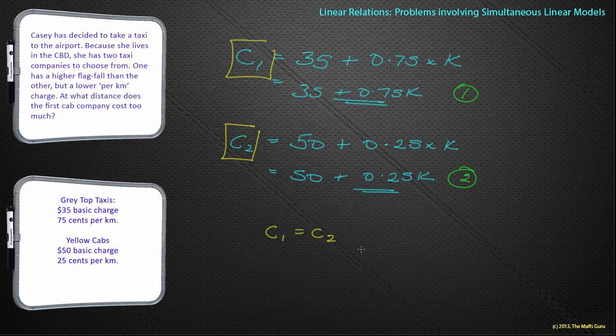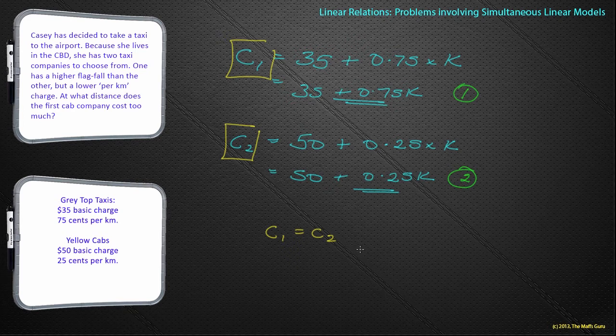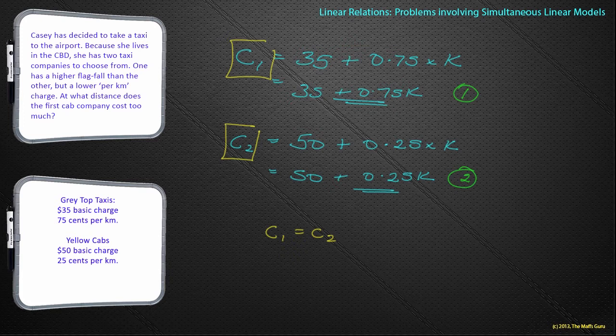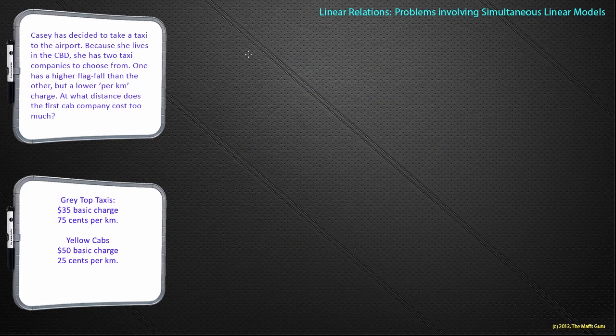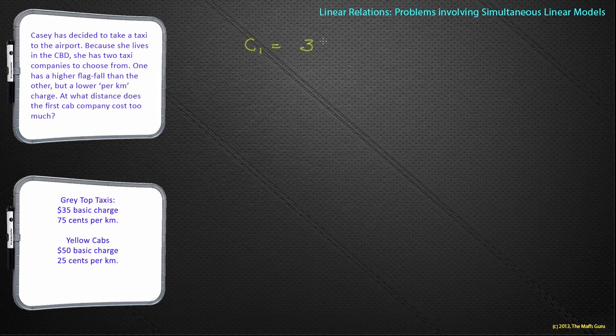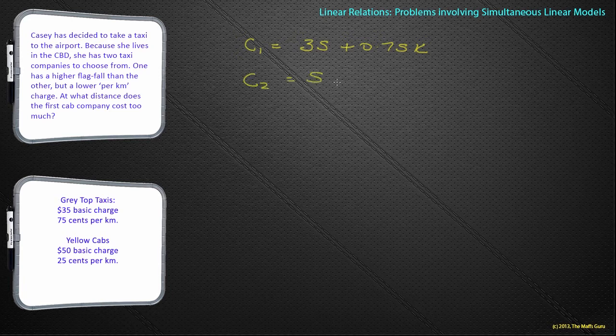Well, if we're looking at the cost being the same, then I'm pretty sure we can look at the idea of the equations being the same. We've got C1 we've decided was 35 plus 0.75k, and C2 is 50 plus 0.25k.